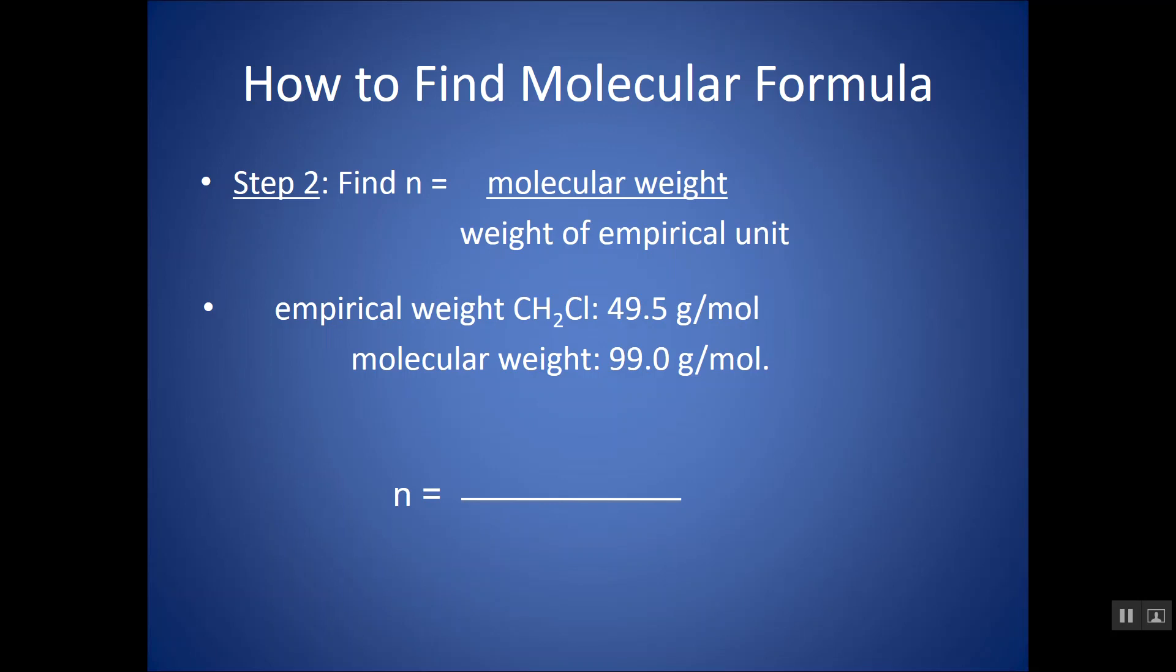So back in the problem, the molar mass was 99 grams per mole of the molecular. I calculated the empiricals to be 49.5, so I'm just going to divide these two numbers, and I get a whole number of two. So what that means is my molecular formula is two times bigger.